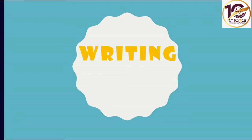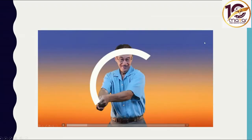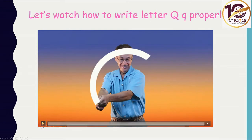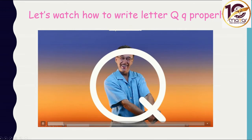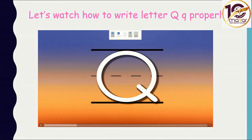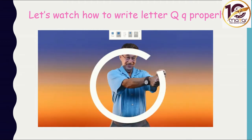Now, let's learn how to write letter Q together. Let's write capital Q and small q together. Write with me just like the video. This is the capital Q. We write it like a circle with a stick. We write it between three lines. Let's write it again — circle and a stick.